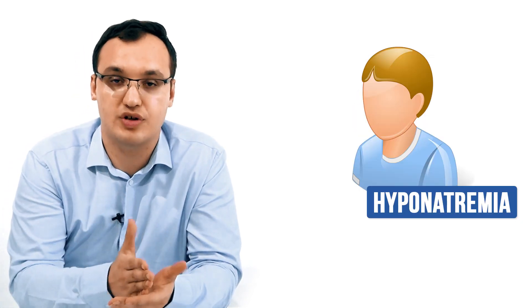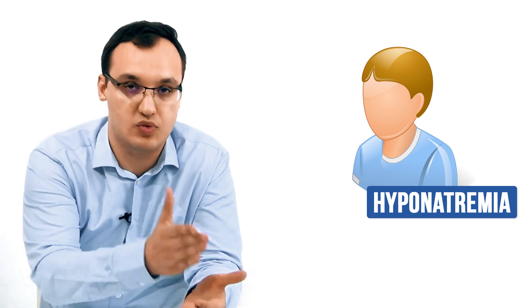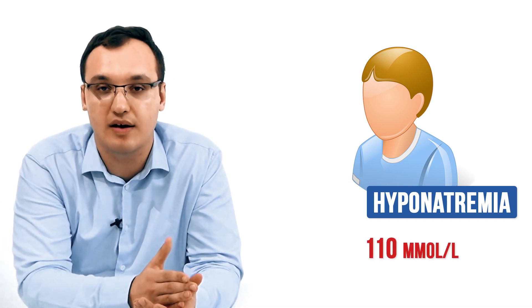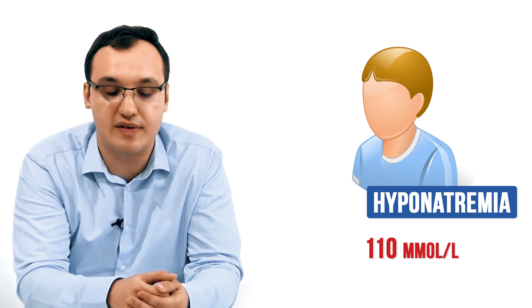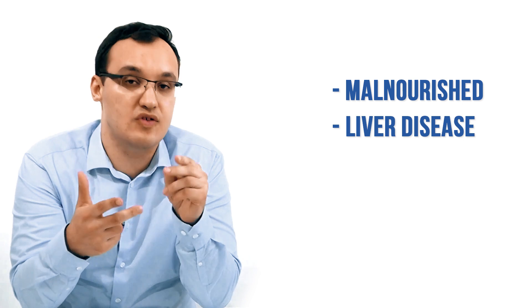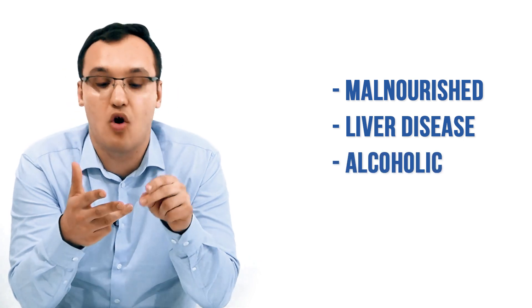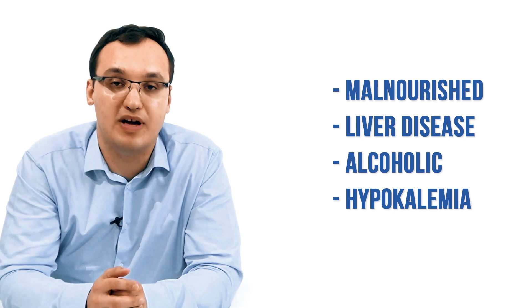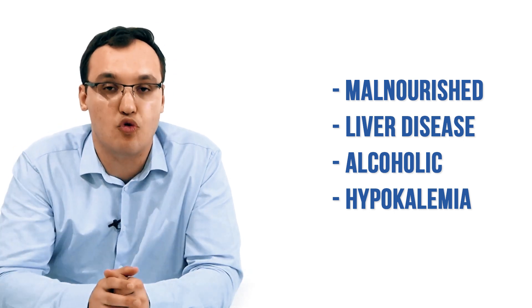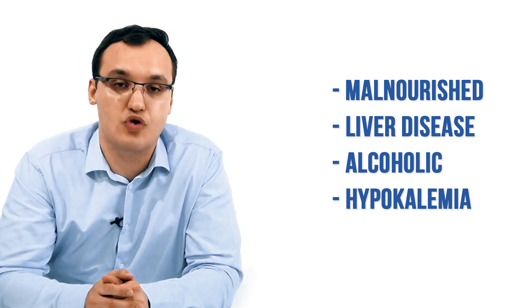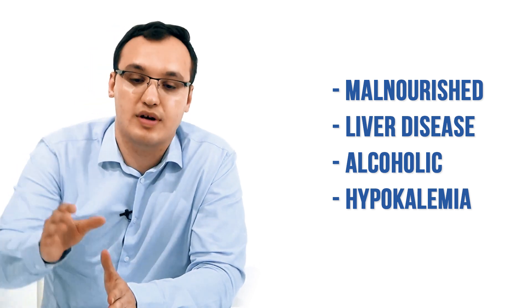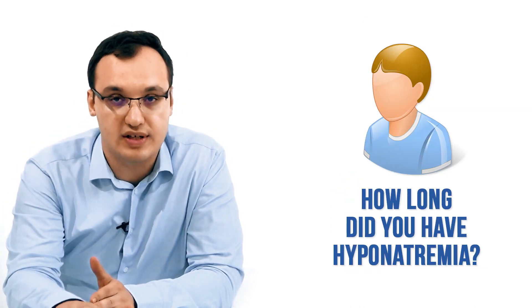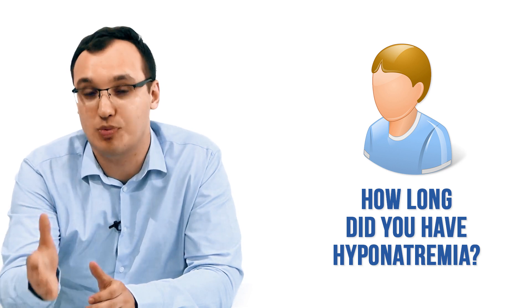To conclude what we can do clinically: a patient has hyponatremia, for example a sodium level of 110 — usually it happens below 120. If this patient is malnourished, has liver disease, is alcoholic, or has hypokalemia — these four types of patients have an increased risk of getting this syndrome. Therefore, we need to ask the patient how long they have had the hyponatremia or these symptoms.